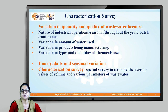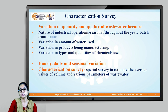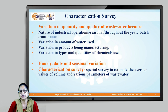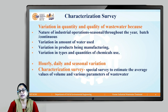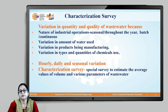Now let us focus on characterization survey. From industry to industry, the processes are different because products are different. In similar industries also, the processes used are different, raw materials are different, and manufacturing quantities are different. Some industries operate throughout the year continuously. Some industries are seasonal, like the sugar industry. Some use batch processes, like dairy. Hence there is significant variation in quantity and quality of wastewater.